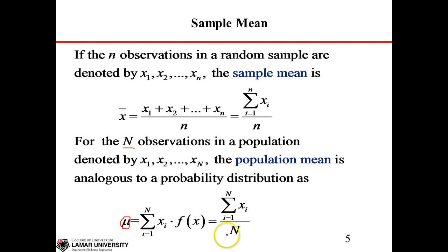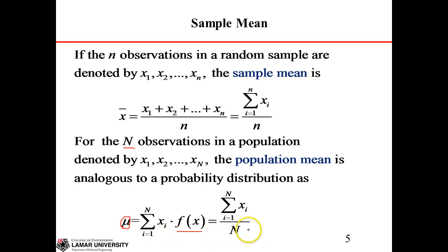For the population, we usually assume we have N observations denoted by x1 to xN. The population mean is analogous to the probability distribution as mu. So we use mu to represent the mean of the population. It is calculated as each individual data multiplied by the probability distribution function, summed across all data. If you have N data in the population, then each one of them has 1 over N probability, so you add all this up to get the population mean.